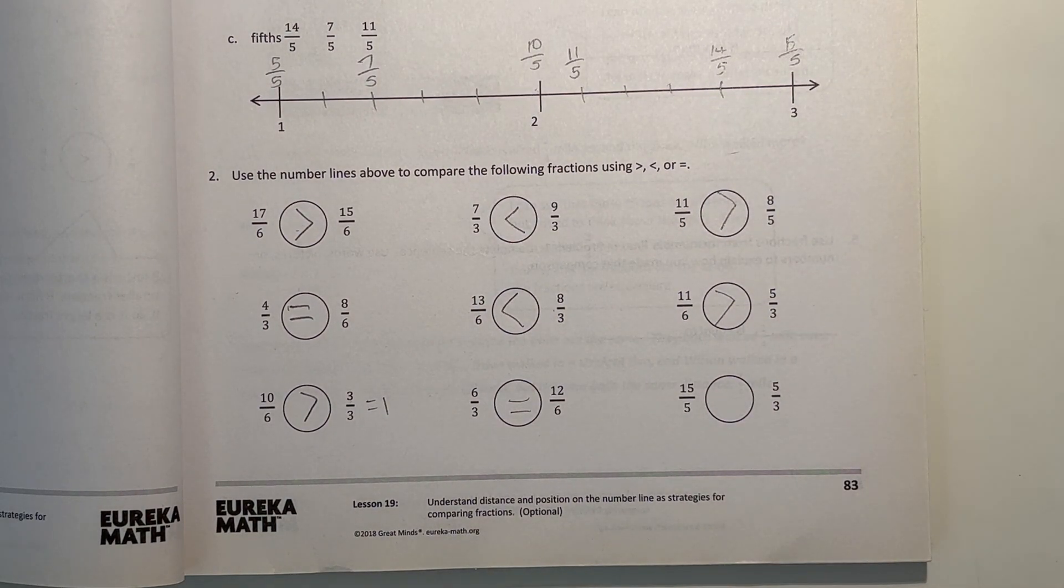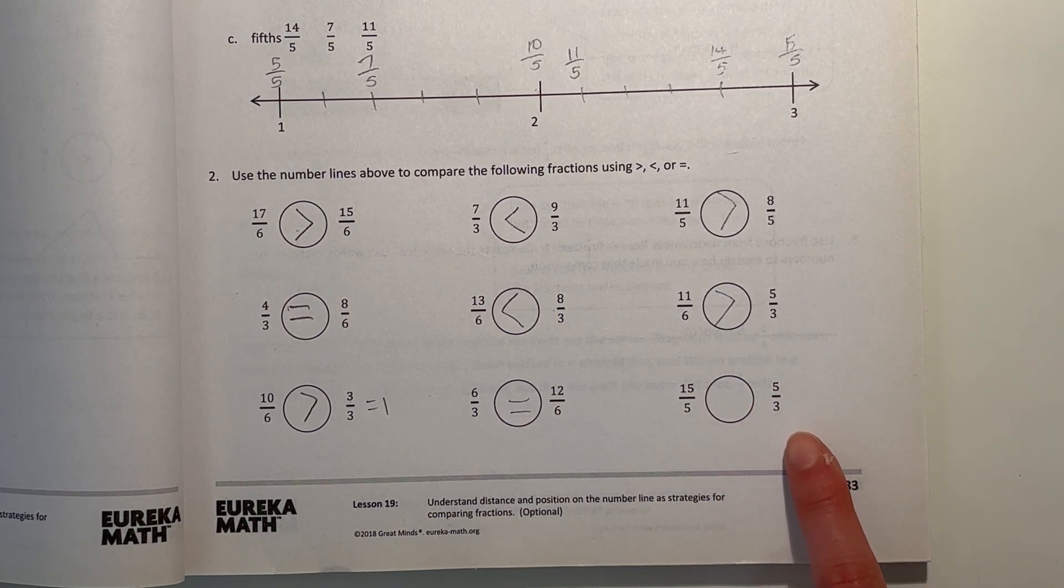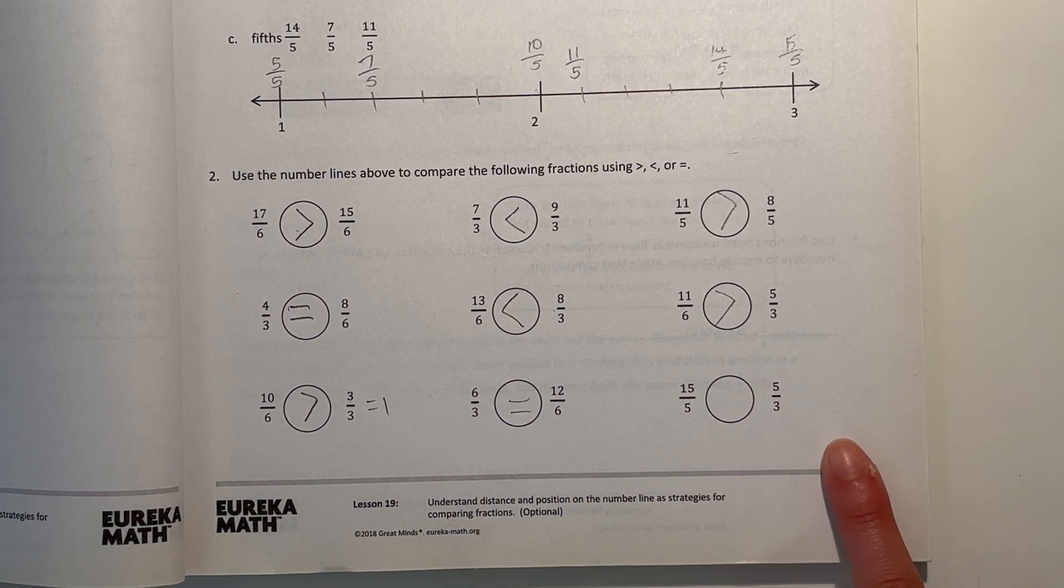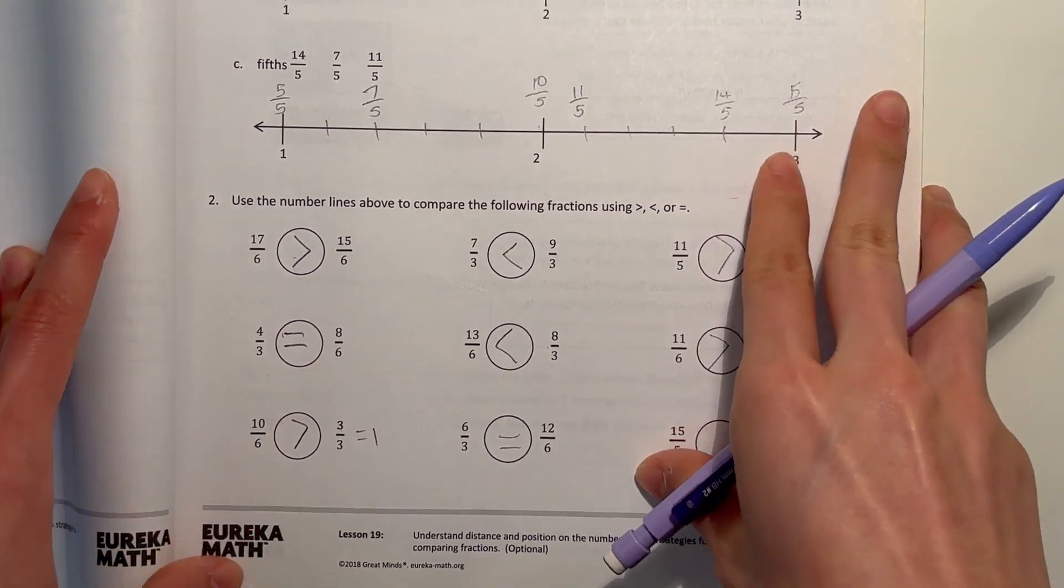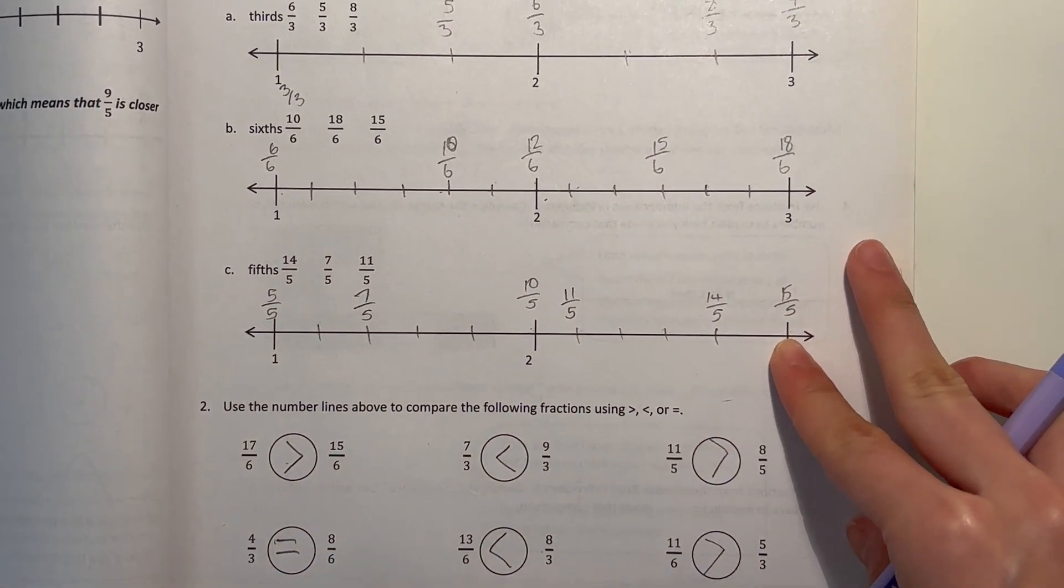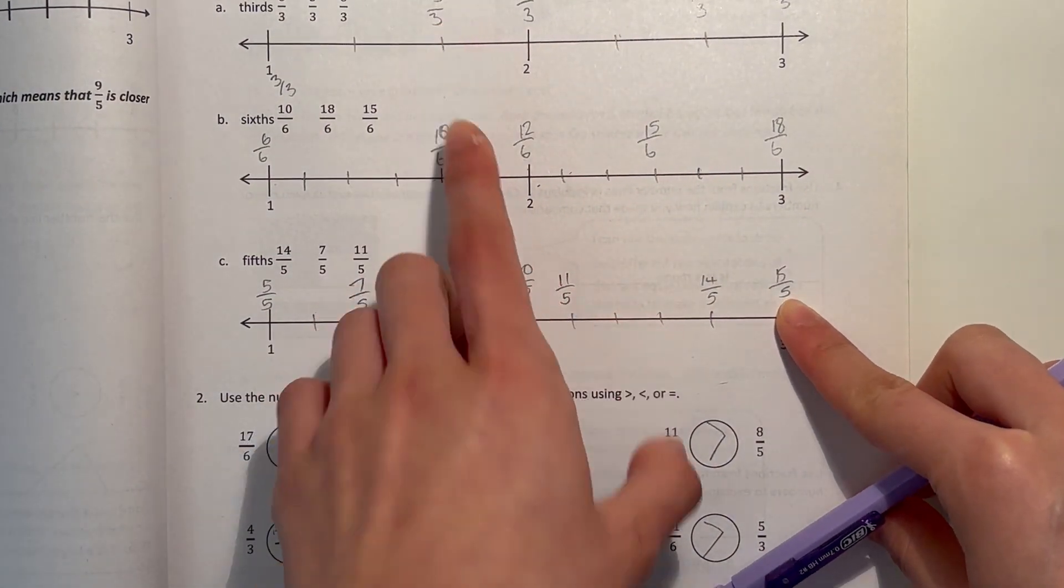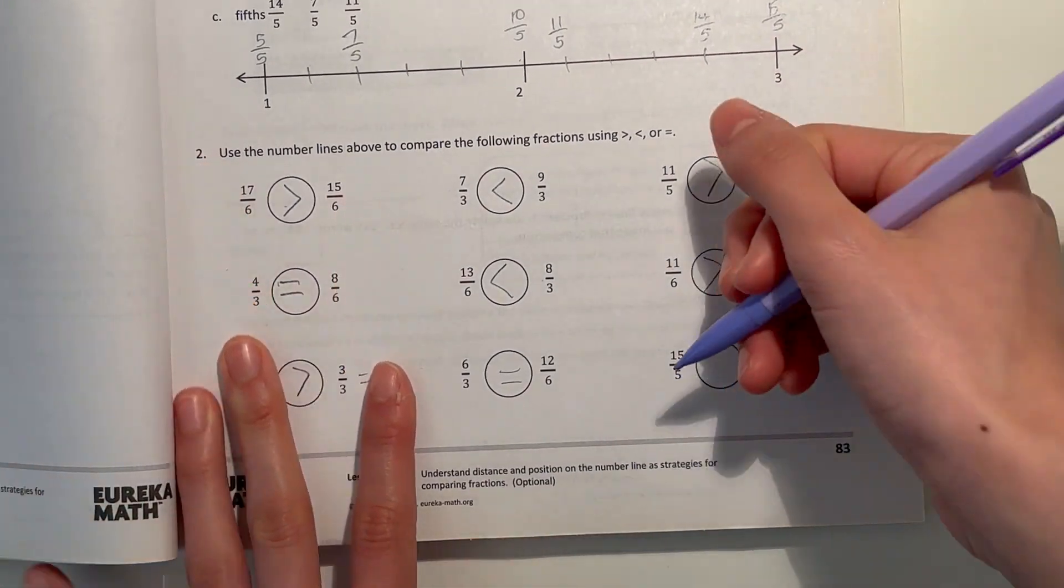And here we have 15 fifths and 5 thirds. So 15 fifths will be right here. And 5 thirds will be over here. So 15 fifths is way greater than 5 thirds.